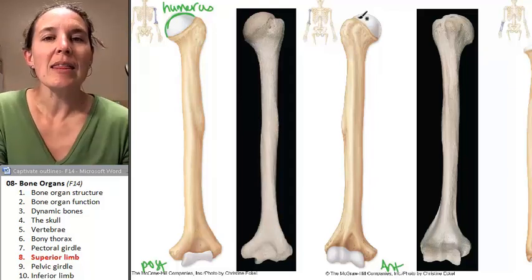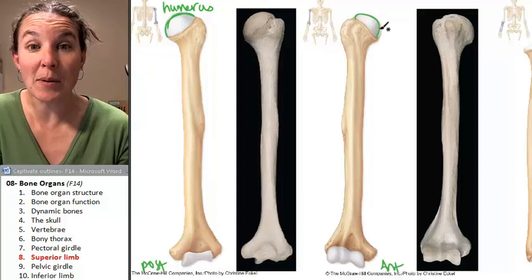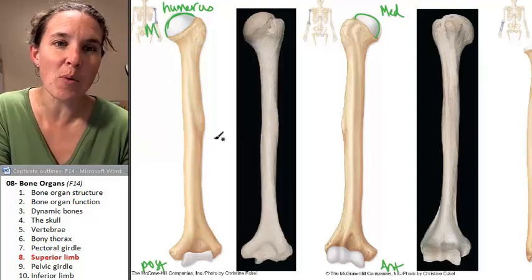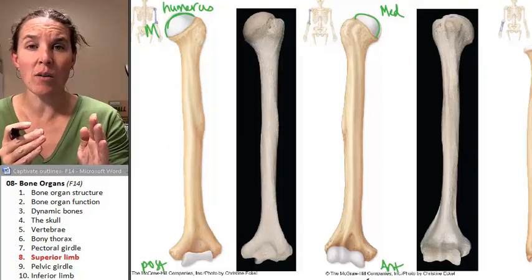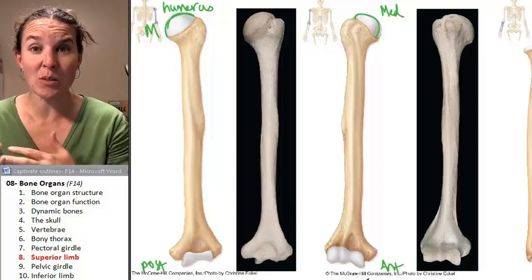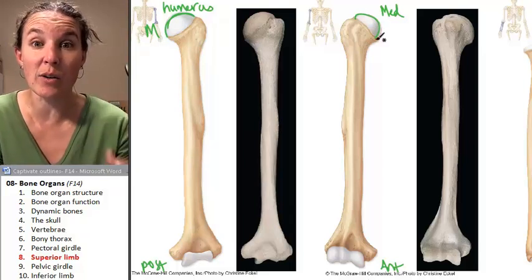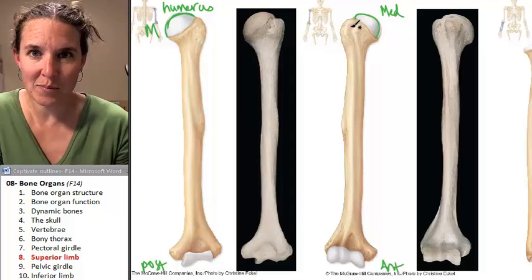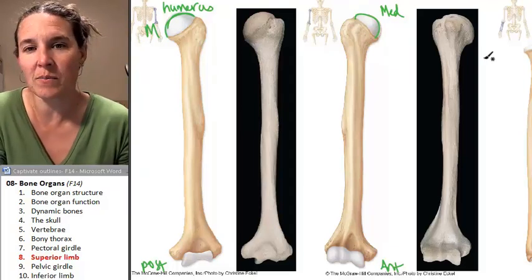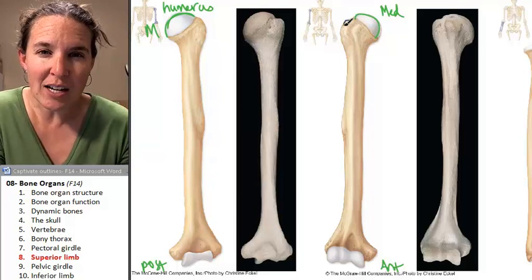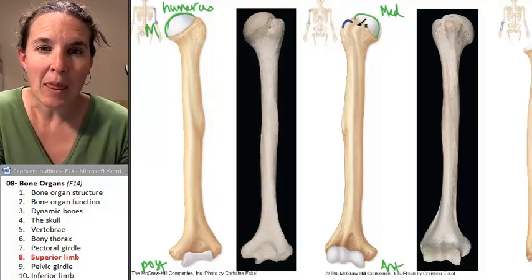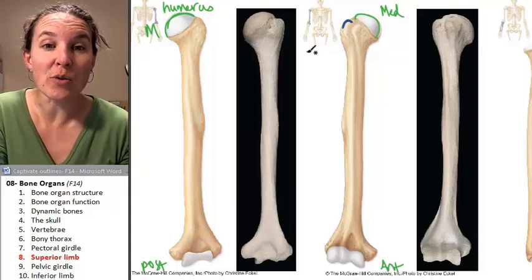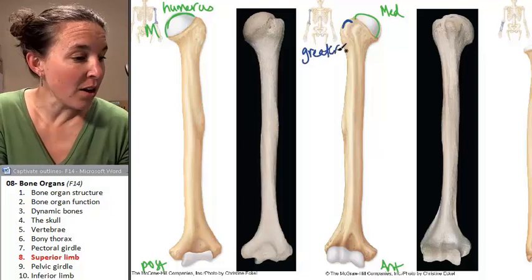Think about this for a second. The head of the humerus articulates with the scapula, which means this has to be medial. The head has to point to the medial side of the body, because that's where it articulates with the glenoid fossa. If this is medial, you can actually see a bump that's lateral to the head of the humerus.